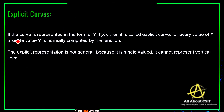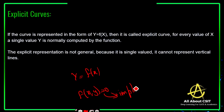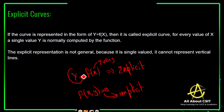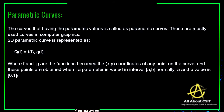Coming to explicit curves: the curve is represented in the form of y = f(x). If f(x, y) = 0 it is implicit; if represented as y = f(x) it is called an explicit curve. For every value of x, a single value of y is computed by the function. The explicit representation is not general because it cannot represent vertical lines.